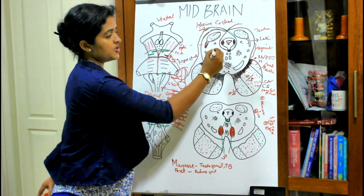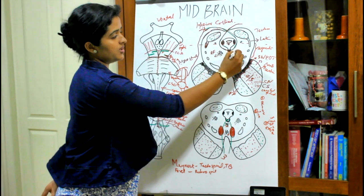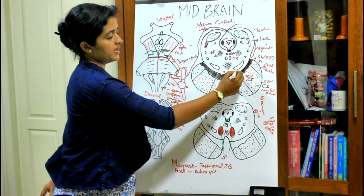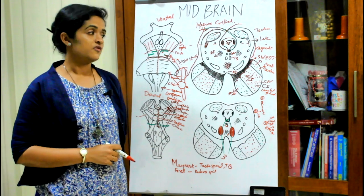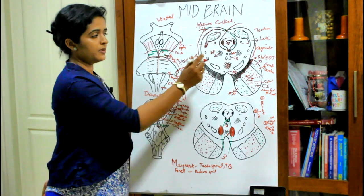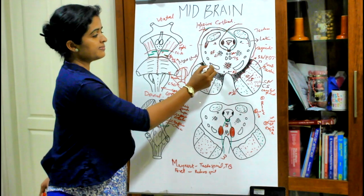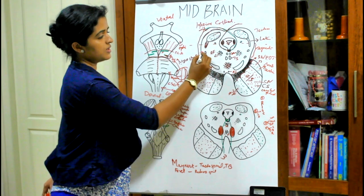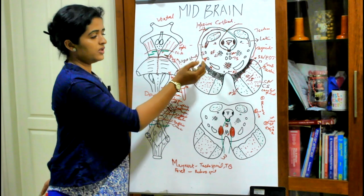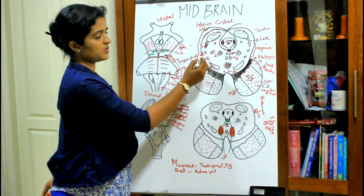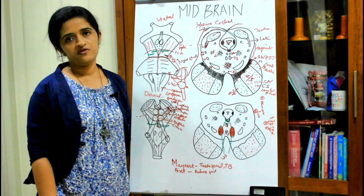Other white matter at the inferior colliculus level includes the reticular formation, and in the midline on either side the medial longitudinal fasciculus, tectospinal, and rubrospinal tracts. There is also a decussating bundle from the superior cerebellar peduncle at this region of the tegmentum. The lemnisci are arranged in order, remembered by the mnemonic 'My Tongue Speaks Loud': M for medial lemniscus, T for trigeminal lemniscus, S for spinal lemniscus, and L for lateral lemniscus — with the lateral lemniscus ending at the inferior colliculus level.